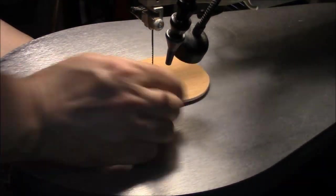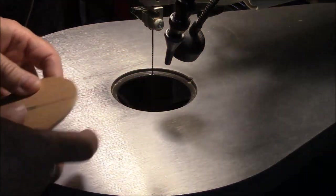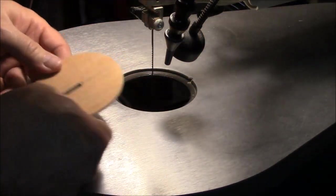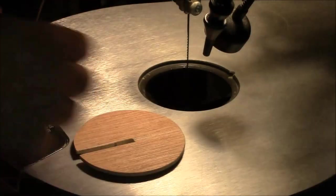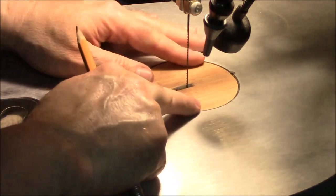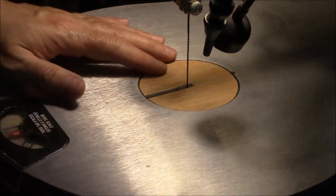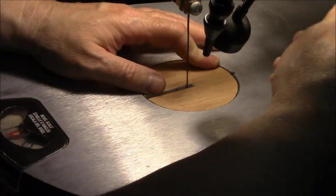The last thing we have to do that's functional on this is put on the little nub that's going to keep it from spinning around. So I'm going to put this in there, get it nice and straight the way that I want it, and then mark where that nub is going to be.